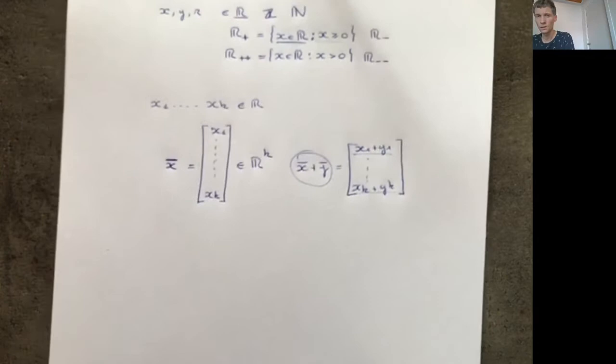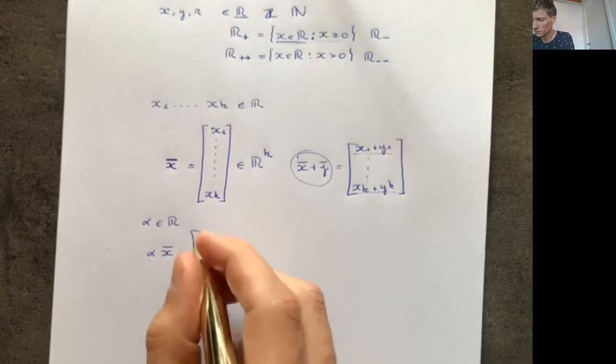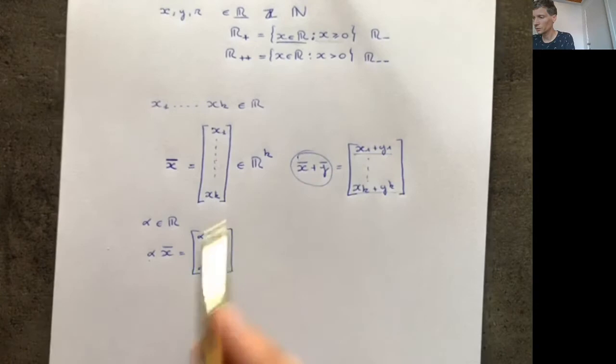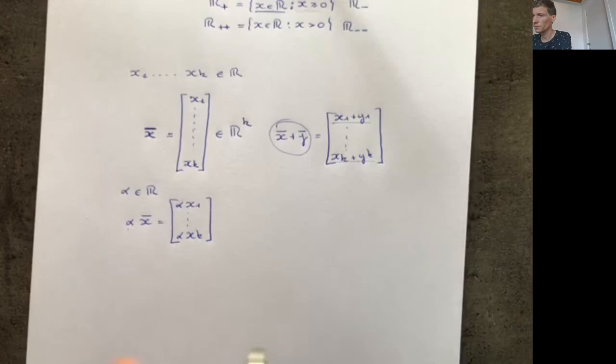We can also multiply a vector by a number. For example, if I have a number α in ℝ, then taking vector x multiplied by α gives a vector obtained by multiplying each element by α. This is called scalar multiplication — multiplying a vector by a number. Something you cannot really do is multiply two vectors together to get another vector; there's no single such multiplication. However, we will see another operation called the dot product.